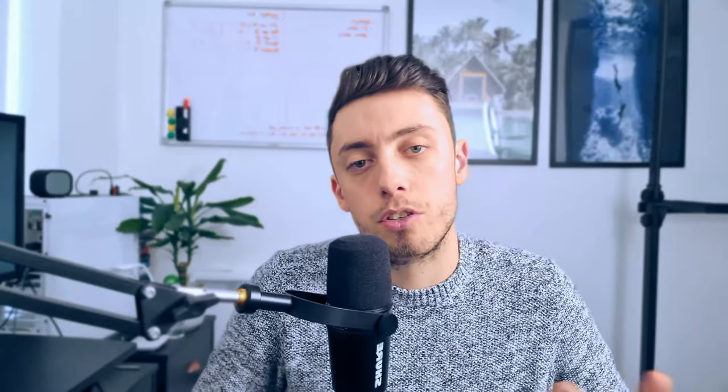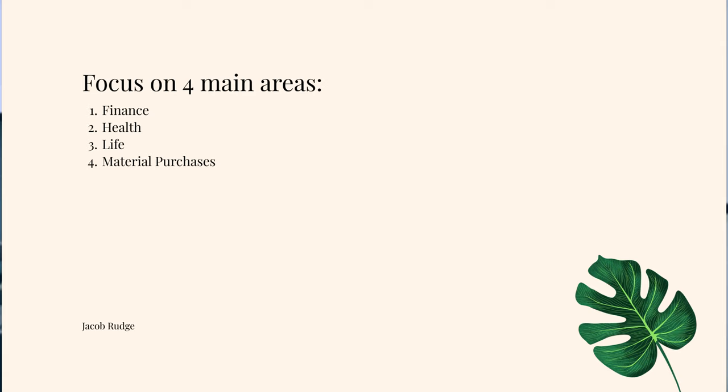Within Miro, plan your 20, 10, and 5 year goals as well as your 12 month and 6 month goals. Focus on four main areas within each of these categories. Focus within four subcategories of these goals: finance, health, life, and material purposes.